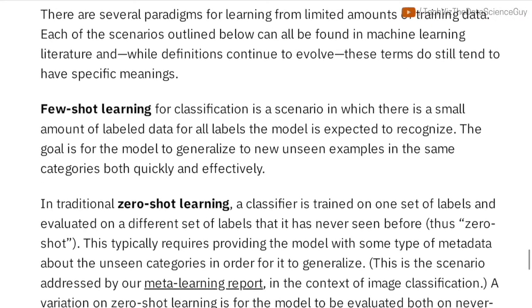So officially they also state what Few-Shot learning means. Few-Shot learning for classification is a scenario in which there is a small amount of labeled data for all the labels the model is expected to recognize. So for example if you're doing classification for science, entertainment, politics and sports, given a news article you want to classify into either of these classes.